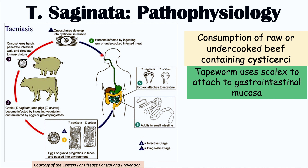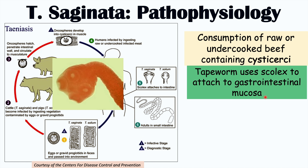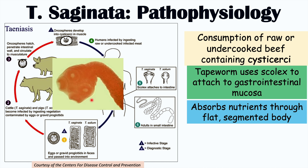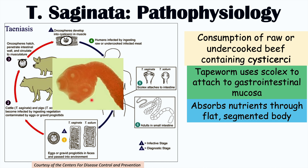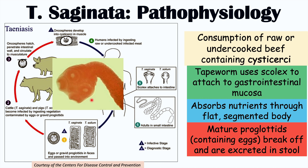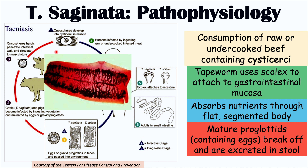A human will then consume raw or undercooked beef or cow muscle containing the cysticercae. The cysticercae will then develop inside the human into an adult tapeworm and will use what is known as a scolex — the head of the tapeworm — to attach to the gastrointestinal mucosa, the inner lining of the small intestine. The tapeworm absorbs nutrients through its flat segmented body. Those segments are called proglottids, which mature and contain eggs.